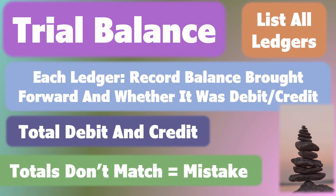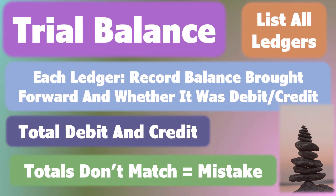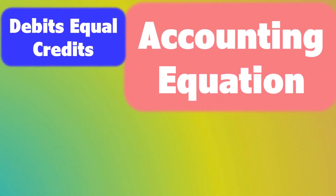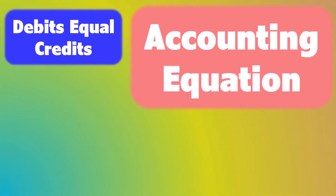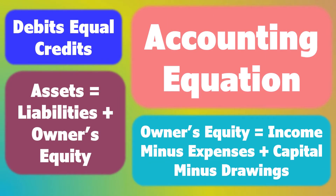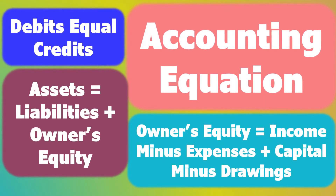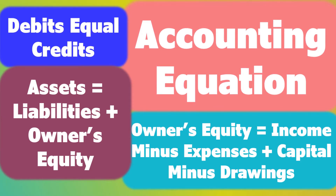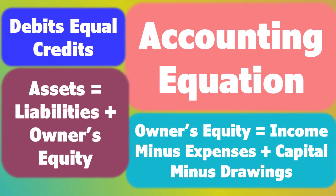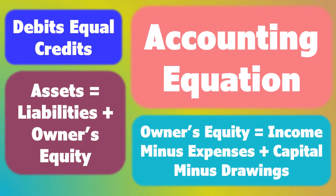If the totals don't match, then we have made a mistake in our accounts. The debits and credits should balance because of the accounting equation, which says that debits equals credits. As debits are our expenses and assets, then credits are liabilities and income. We can expand the accounting equation to say that assets equals liabilities plus owner's equity, but owner's equity represents the income minus the expenses plus the capital minus the drawings.